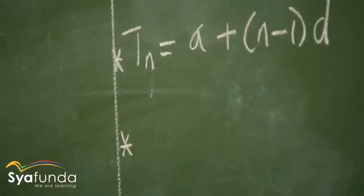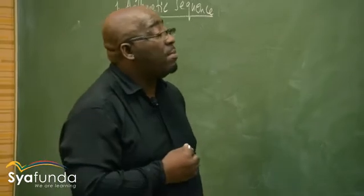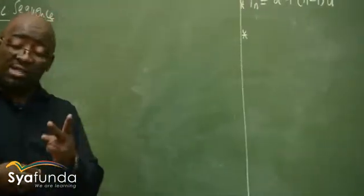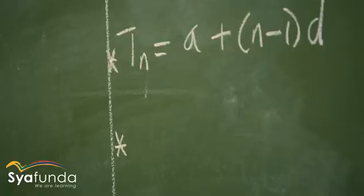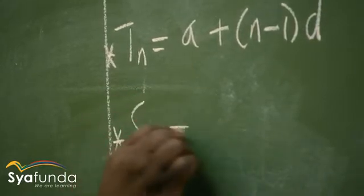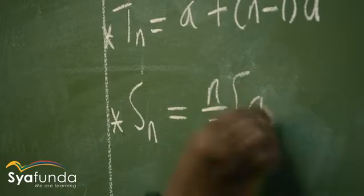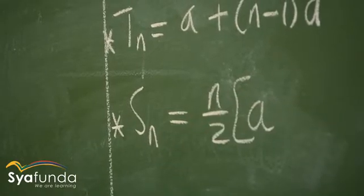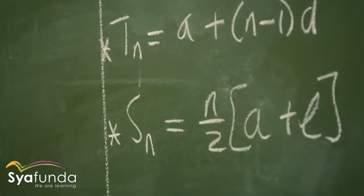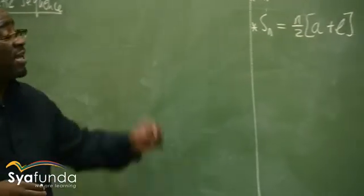On this arithmetic sequence, another important formula here is the one for the sum. Remember, there are only two for the sum. Sum is S. So S_n is equals to n over 2 into a, which is the first term, plus l, which is the last term. So this is one formula to find the sum.